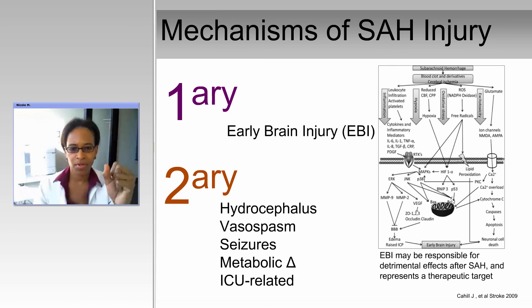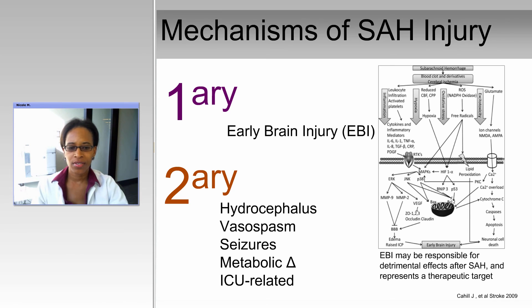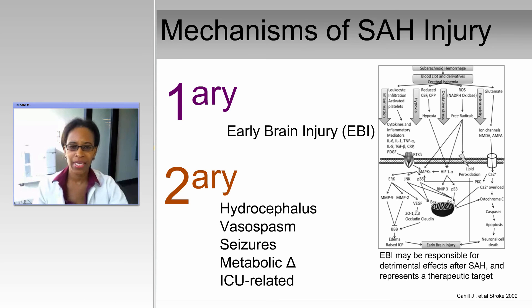Secondary injury targets include vasospasm, which is when the blood vessels clamp down, seizures, metabolic changes such as changes in sodium or potassium levels, and ICU-related changes.